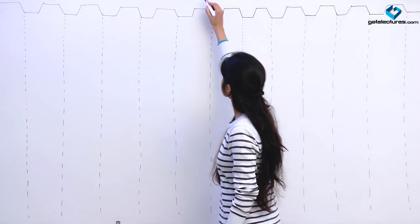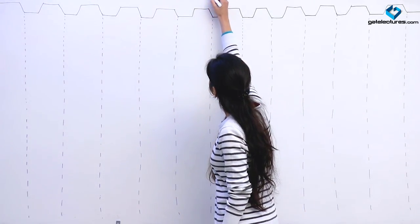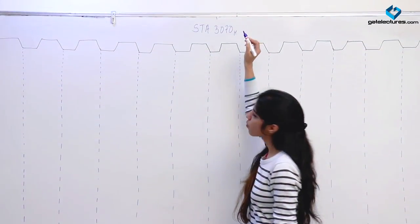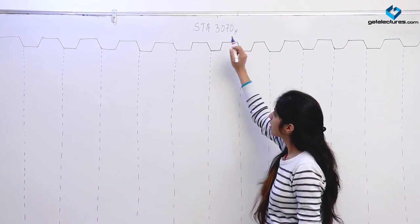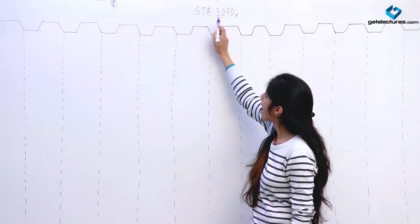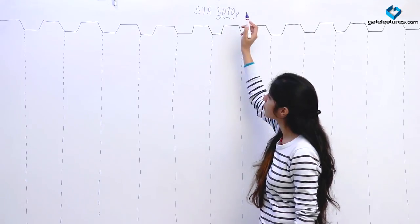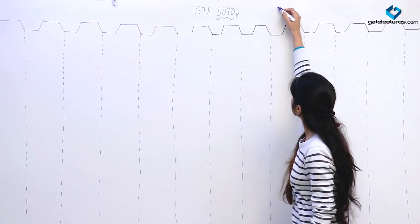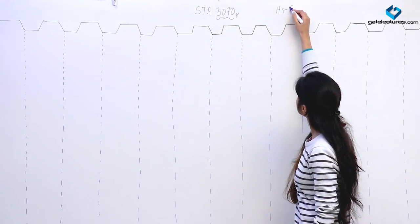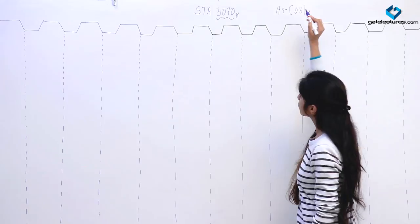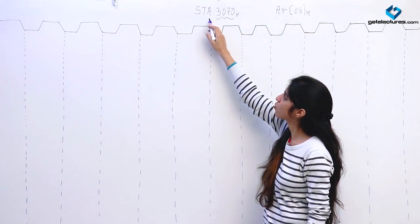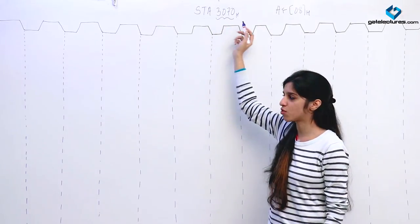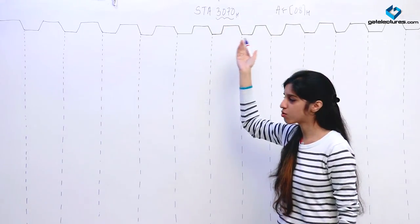Now let us look at the timing diagram of the instruction known as STA. Suppose we are given an instruction STA 3070. What this instruction does is it is going to store the contents of the accumulator at memory location 3070. Suppose the contents of the accumulator are 08H. After execution of this instruction, 08H is going to be stored at memory location 3070. Now let us look at the timing diagram.